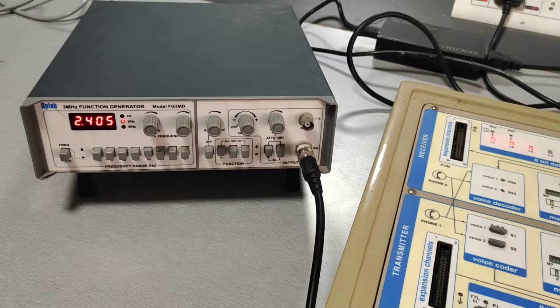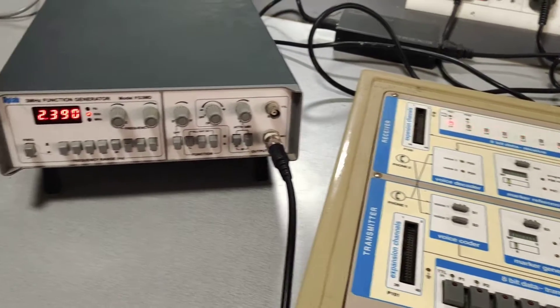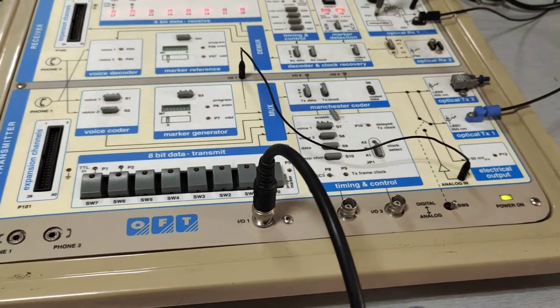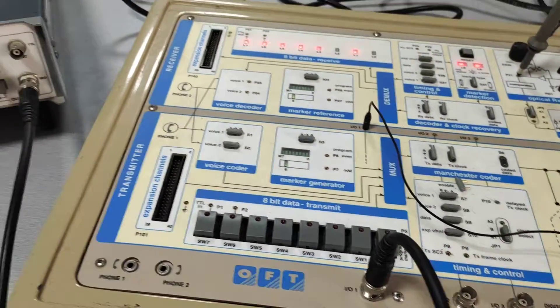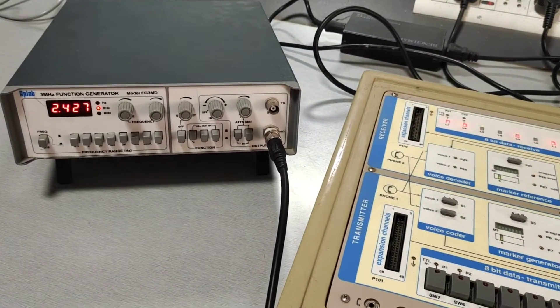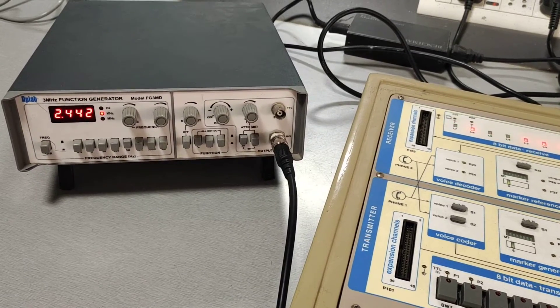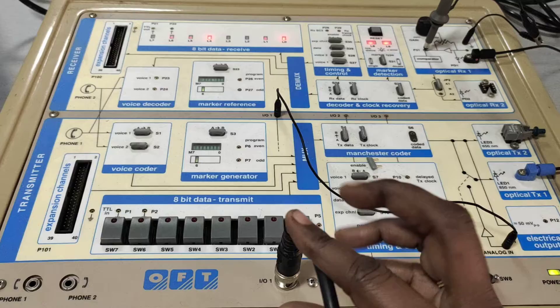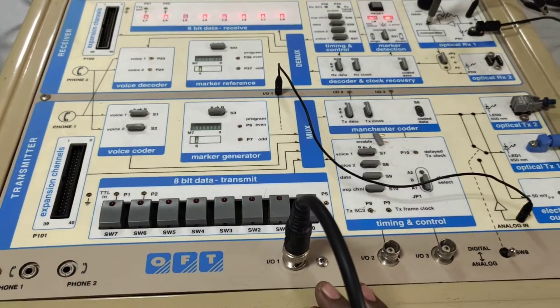First step, we have to set the input signal. Here I am giving input to the IO port 1. I am setting 2 volt, 2 kilohertz amplitude sinusoidal signal to the IO port 1 of optical trainer kit.